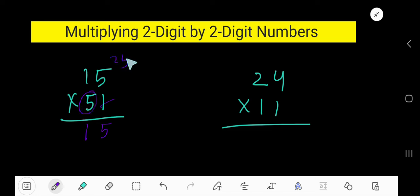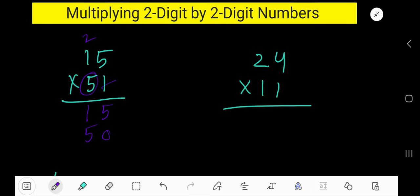5 times 5 is 25. Write 5 here and carry 2 to the next column. Look, this 5 is in the second column, so the product will come to the second column. The first column will have a placeholder 0. Right, 5 times 5 is 25. Write 5, carry 2.